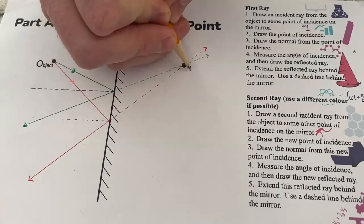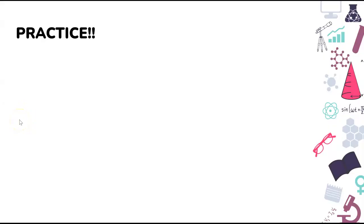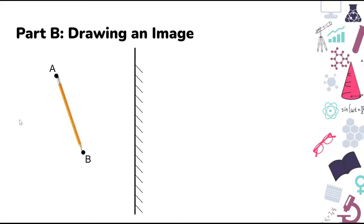Once you've found your image, you should label it — usually with the letter I. Now that you've seen how to find the image of a simple object, it's time to practice. Pause the video, go through the two practice objects on the worksheet, then come back and continue. The next step is being able to draw a slightly more complicated image. In part A we saw a simple dot; now we have a slightly more complicated object, and we'll switch to paper.